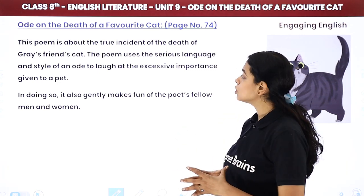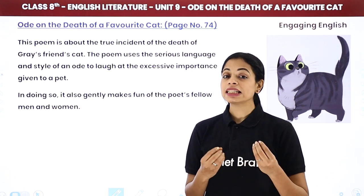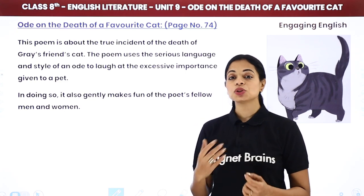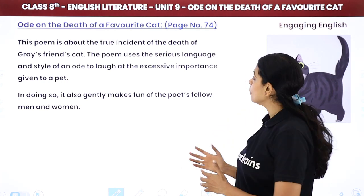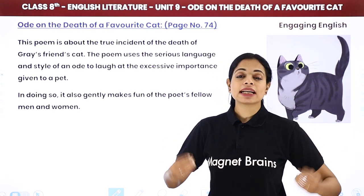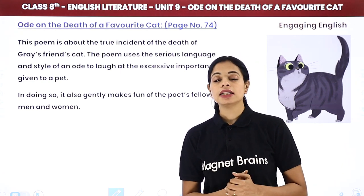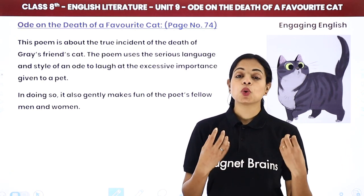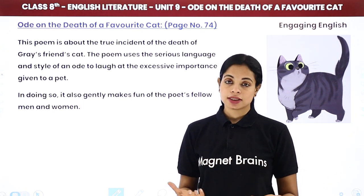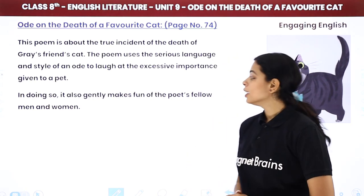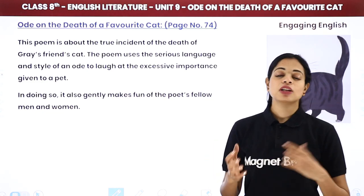This poem is about the true incident of the death of Gray's friend's cat. Once Gray was out to a friend's place for dinner, and wahaan pe jo unke friend ki cat thi, uski death ho gayi. The poem uses the serious language and style of an ode to laugh at the excessive importance given to a pet, and in doing so, it also gently makes fun of the poet's fellow men and women.